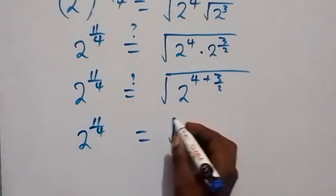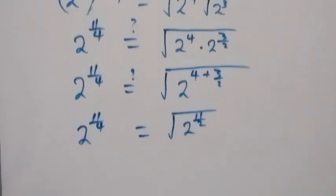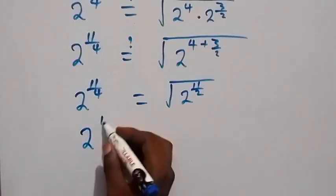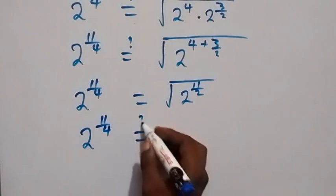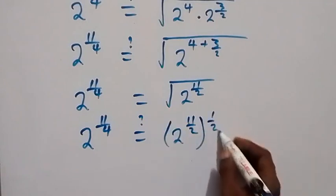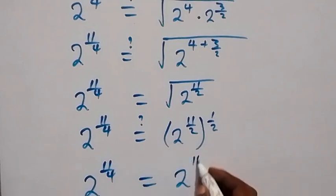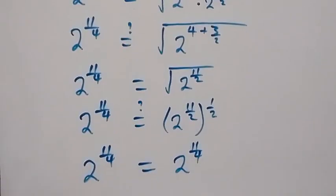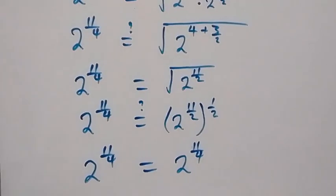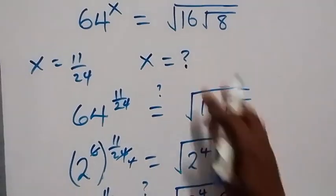From here, the square root is the same as raised to power one-half. So we have 2 raised to power 11 over 4 equals 2 raised to power 11 over 2, then raised to power 1 over 2. Multiplying the powers gives 2 raised to power 11 over 4. Therefore the left-hand side equals the right-hand side, and we conclude that x equals 11 over 24 satisfies this given problem.